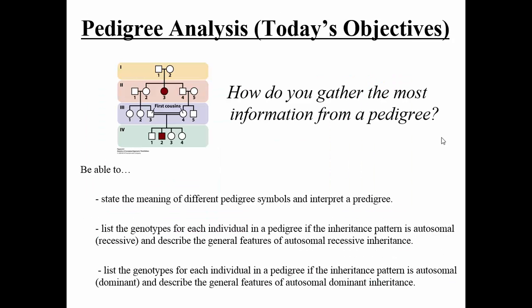In today's lecture we covered different types of pedigrees, discussed the symbols and how to interpret a pedigree, and focused on autosomal recessive and autosomal dominant inheritance patterns. In future lectures we will focus more on sex linkage as well as cytoplasmic inheritance.